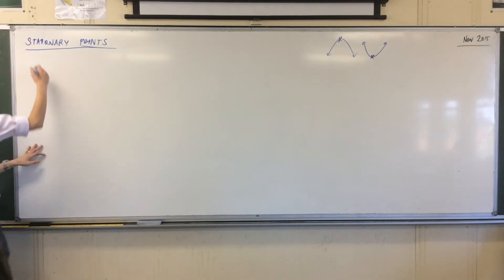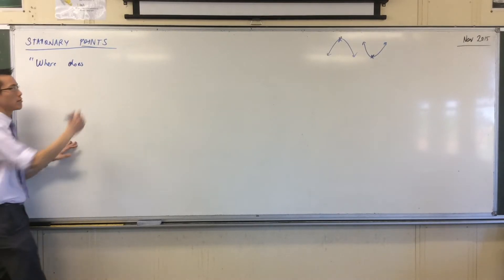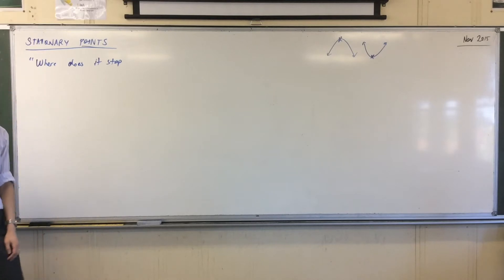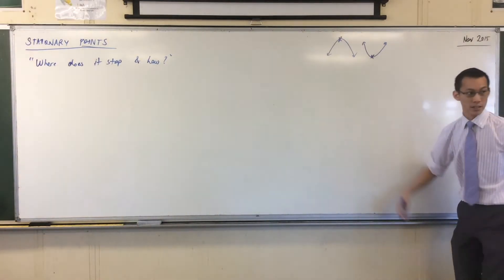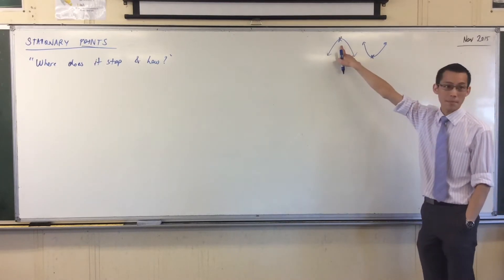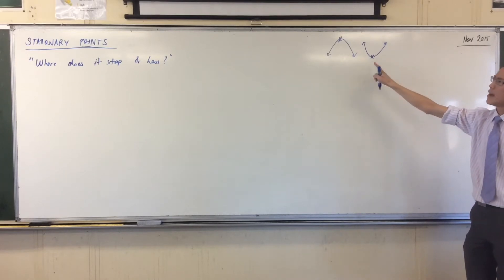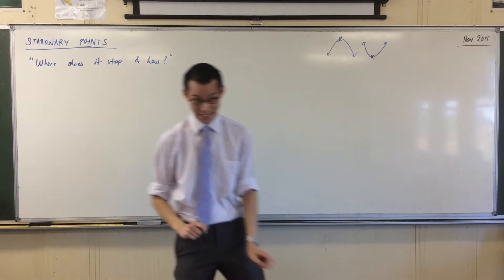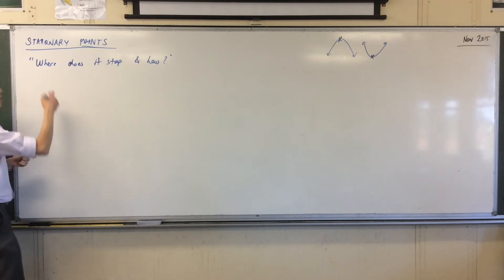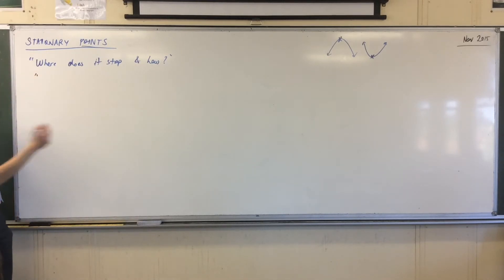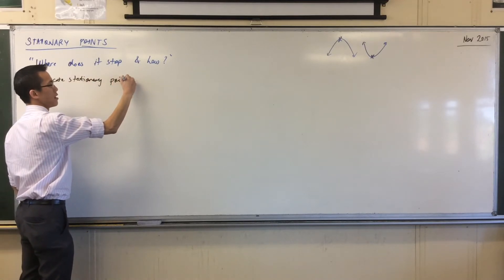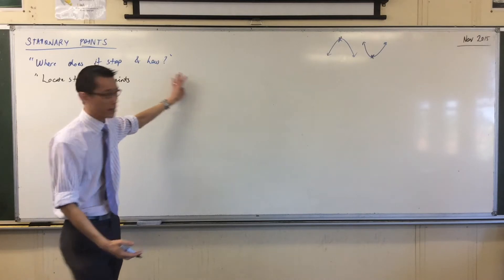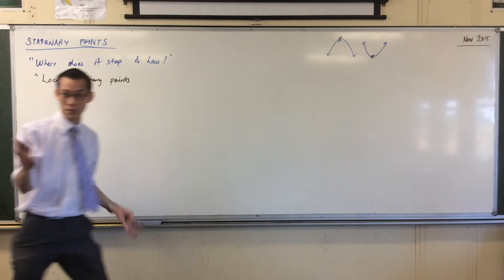So under the heading of stationary points, the important question we get to ask — in informal language — is: where does a function stop, when does it become stationary, and how? In what way does it stop? Because things can stop in different ways. We translate this into mathematical language: find or locate all stationary points, tell me where they are, and tell me what kind of stationary point it is — describe the behavior of the stationary point.